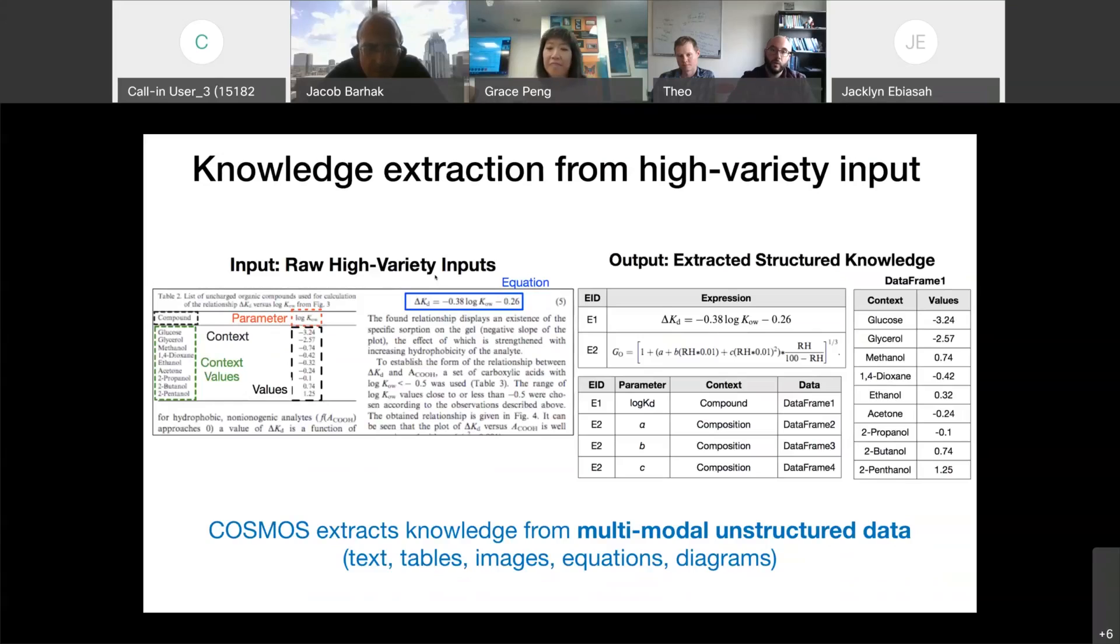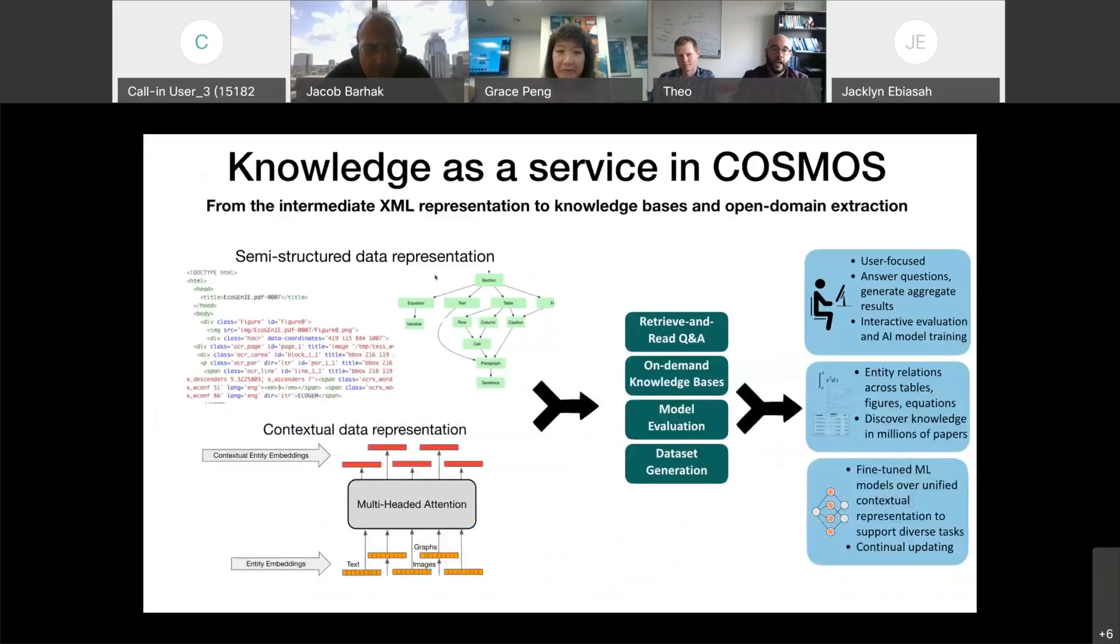So let's see how we do that. To achieve this goal, we rely on the intermediate semi-structured data representation that we have from Cosmos. And there are certain services, knowledge extraction services that we can directly obtain from this representation.